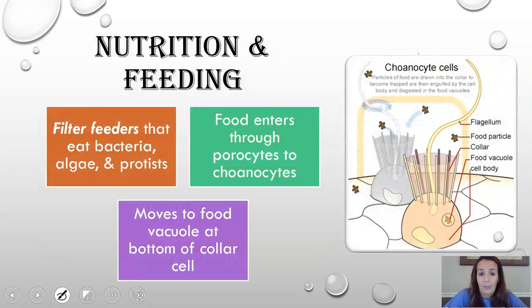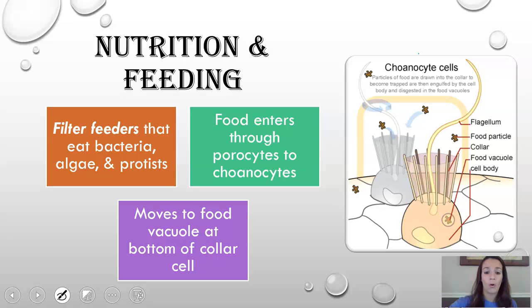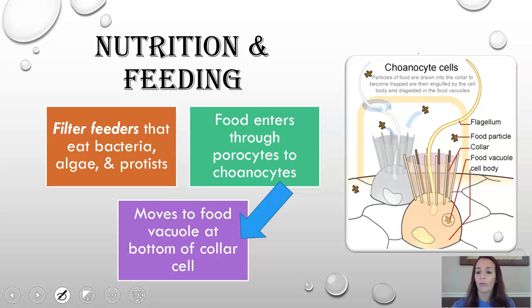Now that we've established sponges are animals with all these different kinds of cells and are filter feeders, how do they eat specifically? They eat bacteria, algae, and other little water protists that are floating around and get passed through the pores into their bodies. The food enters the porocyte, goes to the choanocyte — the collar cells — and then moves to a vacuole at the bottom of the collar cell. The water gets pumped back out of the sponge, while the food ultimately gets used for nutrition.